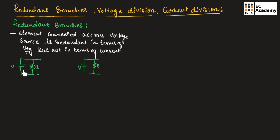If we consider this example, the current source is connected in parallel to the voltage source. That's why this current source is redundant in terms of voltage, but it is not redundant in terms of current. Since the same voltage will appear across this element, we can neglect this branch and rewrite the circuit as only a voltage source.